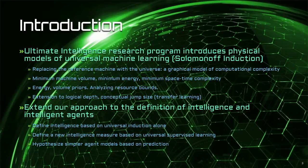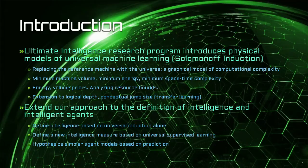The Ultimate Intelligence Research Program introduces physical models of Universal Machine Learning, which is the same thing as Solomon's Universal Induction Scheme. We can replace the reference machine in Universal Induction with the universe using a graphical model of computational complexity, which yields a more universal yardstick. We define new physical measures of stochastic algorithmic complexity, or learning to simulate a stochastic source, based on minimum machine volume, minimum energy, and minimum spacetime complexity. We introduce energy and volume as new universal priors and analyze resource bounds of interest. Then we extended these measures to logical depth and conceptual jump size, which is the complexity of transfer learning. In this paper, we extend our approach to the definition of intelligence and intelligent agents.